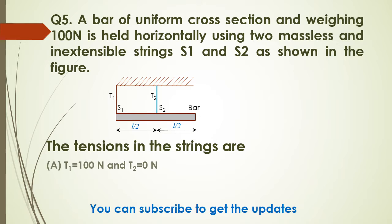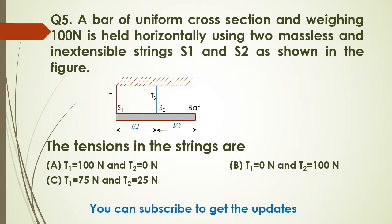Now look at the options. Option A: T1 equals 100 Newtons and T2 equals 0 Newtons. Option B: tension in string S2 is 100 Newtons. Option C: tension in string S1 is 75 Newtons and tension in string S2 is 25 Newtons. Option D: tension in string S1 is 25 Newtons and tension in string S2 is 75 Newtons.